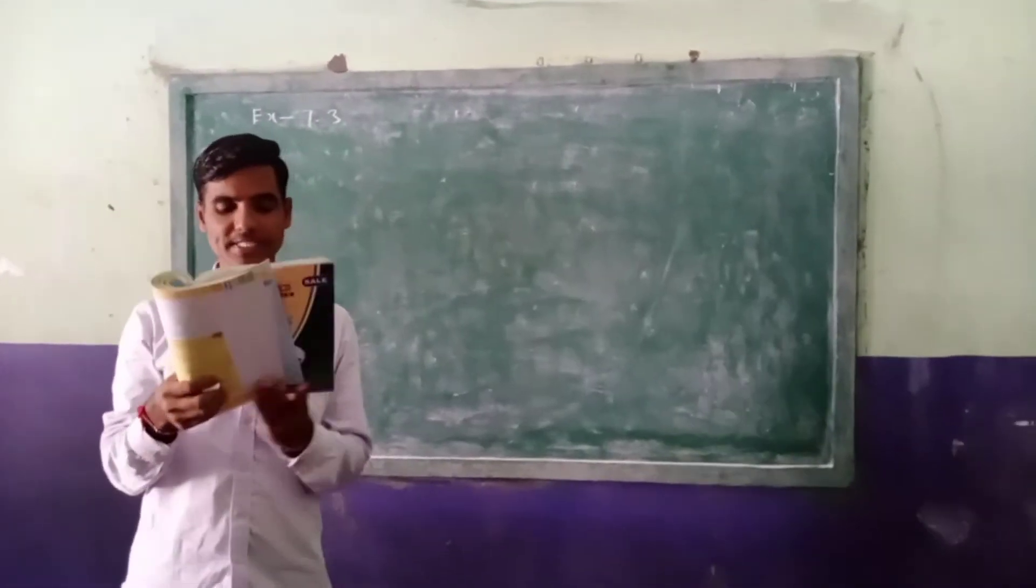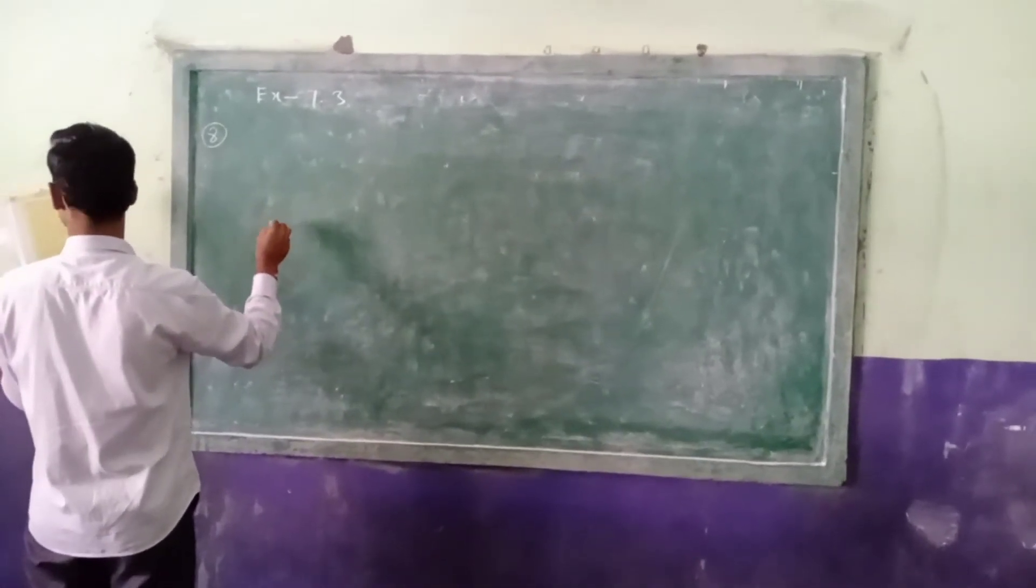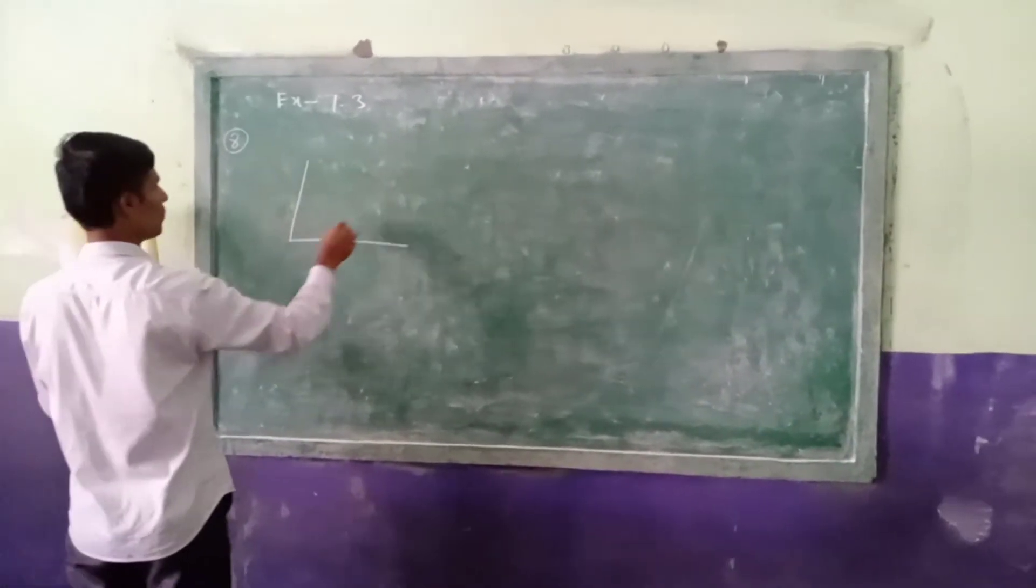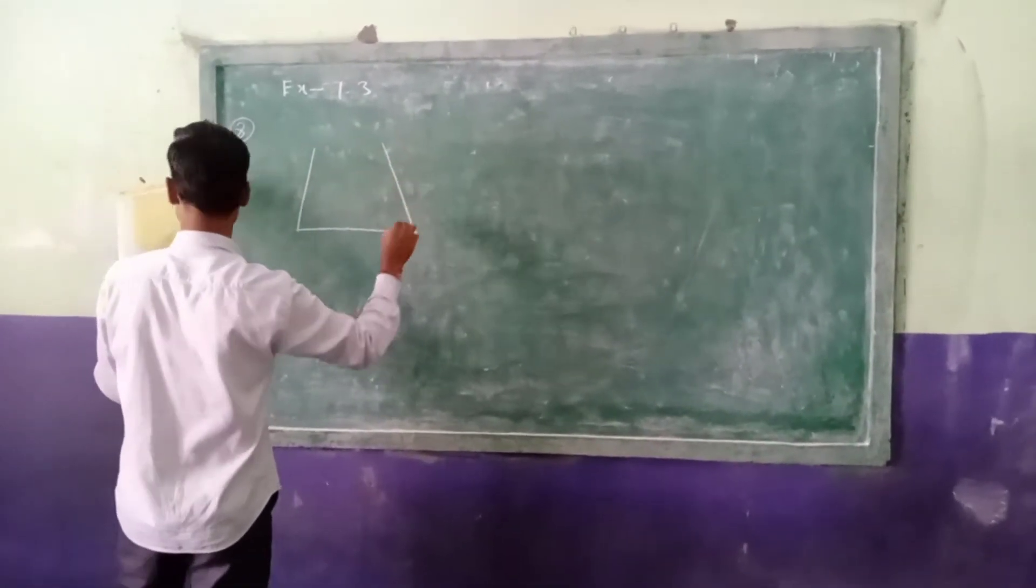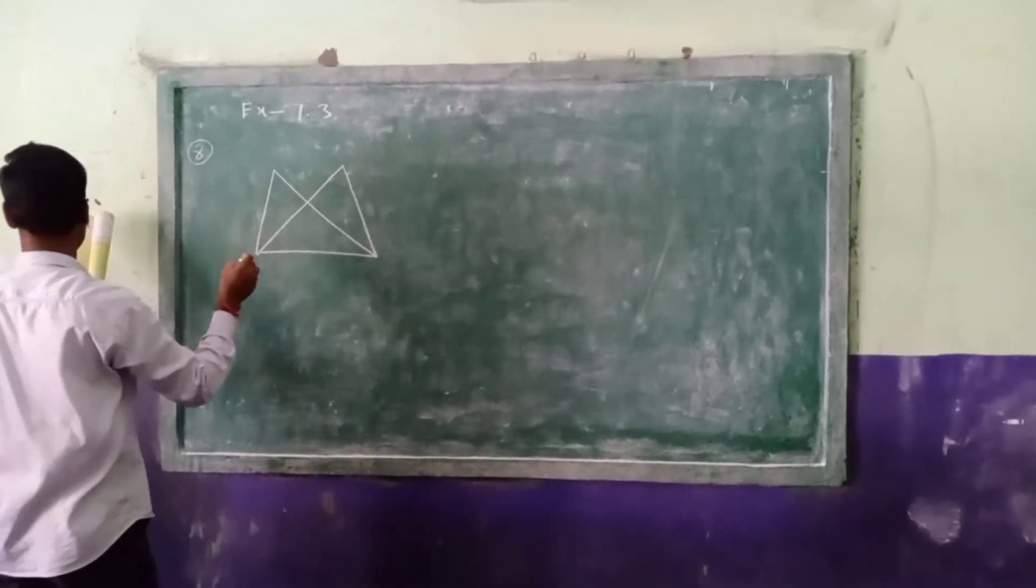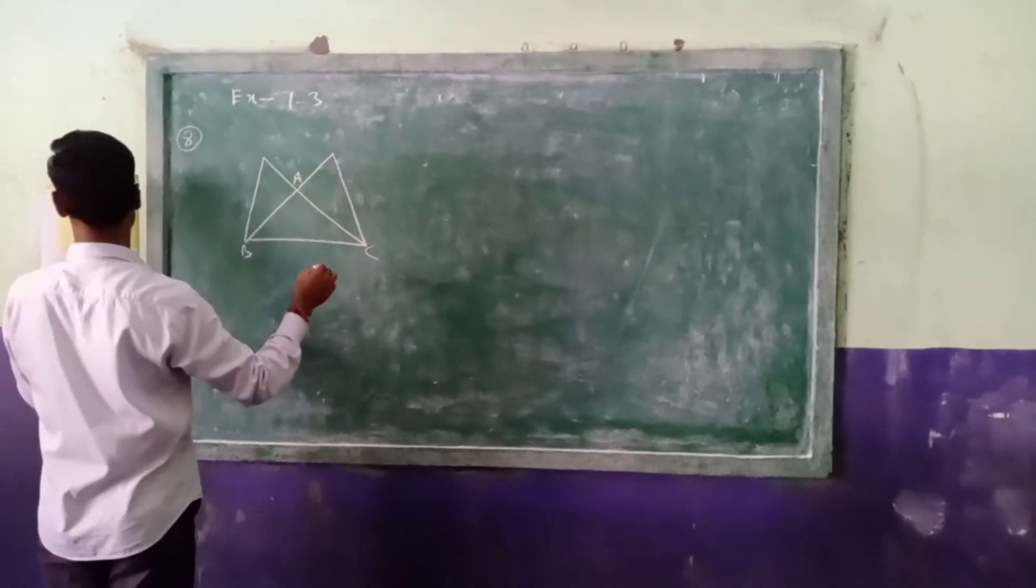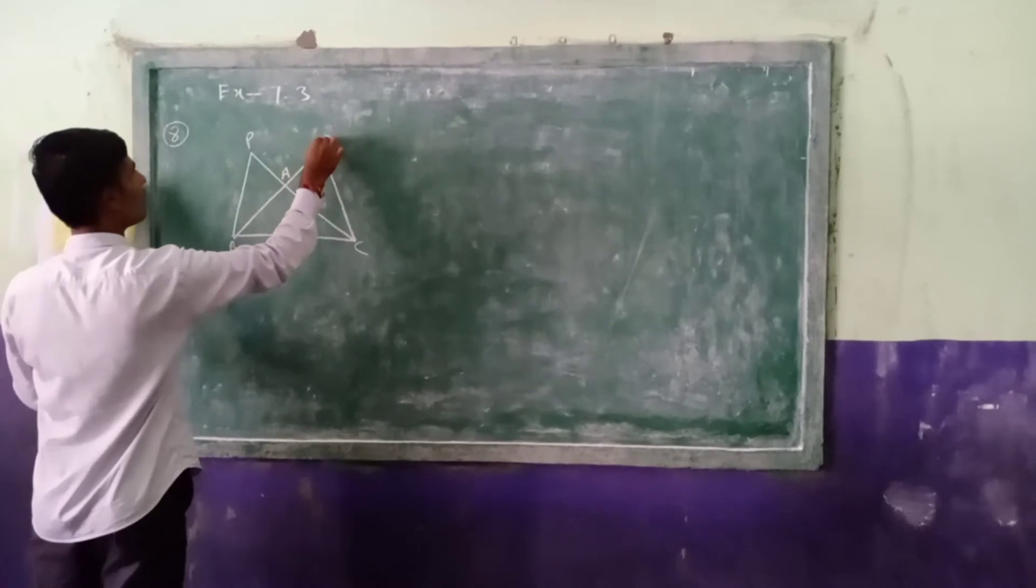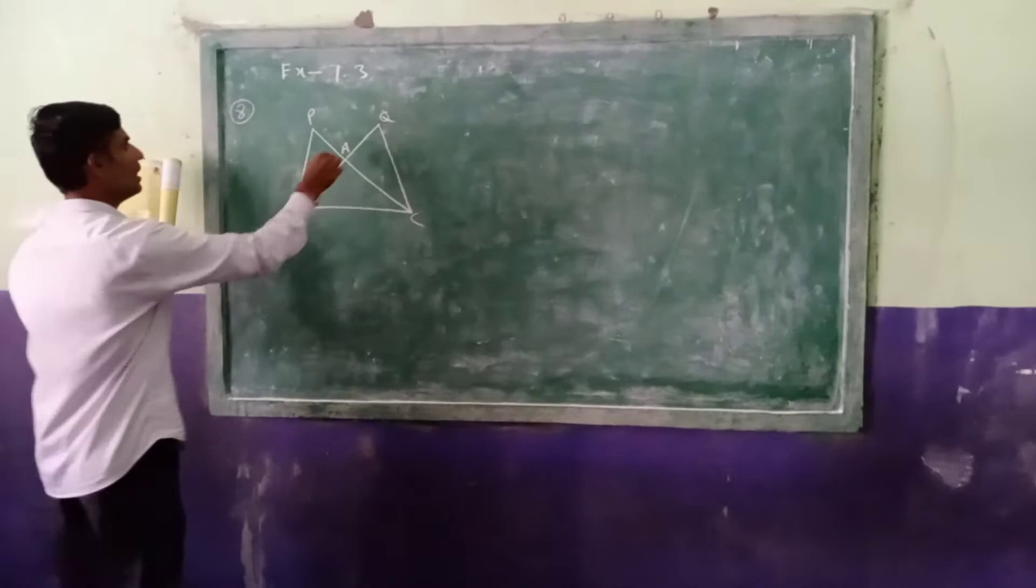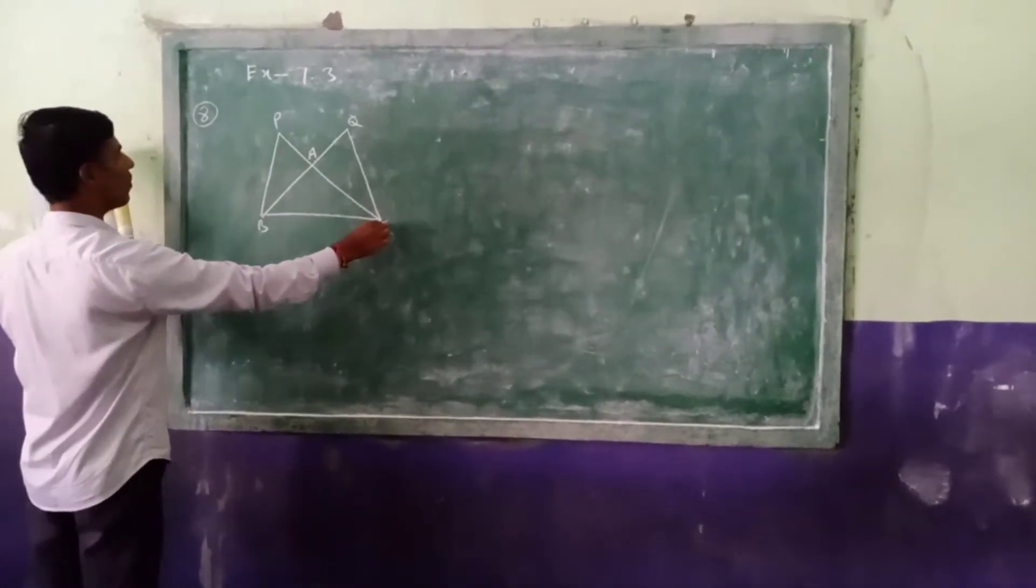In the adjacent figure, they given A, B, C, P and Q. ABC is isosceles triangle. Its two sides are equal in this. AB equal to AC.